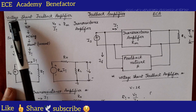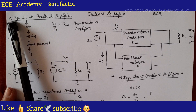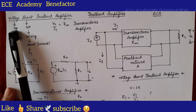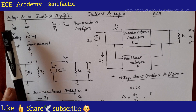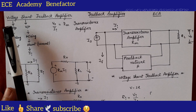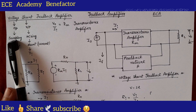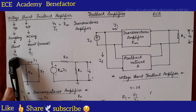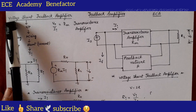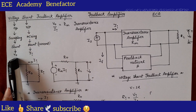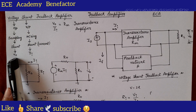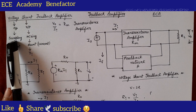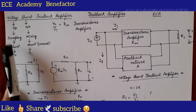Voltage shunt — 'voltage' is the first word. The first word tells about the output. At the output side we do sampling — voltage sampling is done. If voltage sampling is done, the connections at the output are shunt connections. The parameter sampled is V-naught, that is voltage.